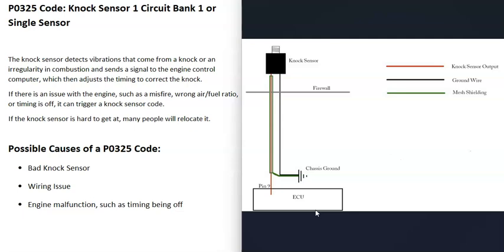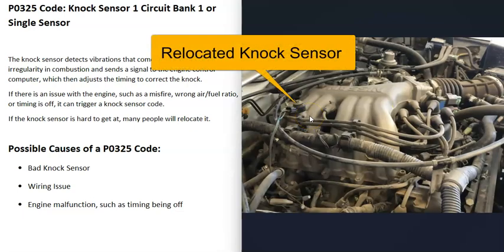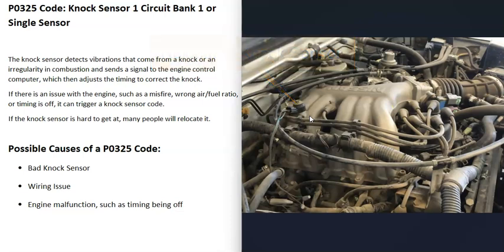One thing about relocating the knock sensor is you can use it to troubleshoot. I wouldn't recommend relocating it permanently, but you can do it temporarily to determine if it's the wiring or a bad sensor. If you relocate the knock sensor, tie into the wires going to the old sensor, and the code clears and doesn't return,